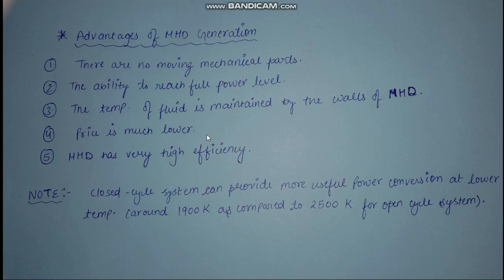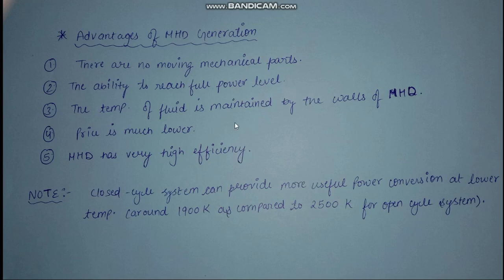Now I will tell you the advantages of MHD generation over conventional methods. The first advantage is that the working fluid circulates and there are no moving mechanical parts, which reduces mechanical losses. The second advantage is the ability to reach full power level almost instantly. The third advantage is that the temperature of the working fluid is maintained by the walls of the MHD duct. The fourth advantage is that the MHD generator is lower in cost than conventional generators. The fifth advantage is that MHD has high efficiency, higher than most other conventional and non-conventional methods of generation.